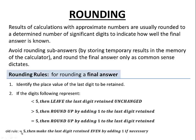Now there is an old rule where if it was equal to five, we'd make the last digit retained even by adding one or just leave it if it was already even. But this is an old rule, and technology now tends to round up if it's equal to or greater than five. So let's take a look at some examples.